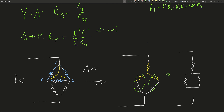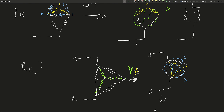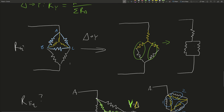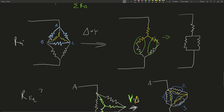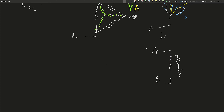A general rule of thumb: if you see triangles of resistors in your resistor network, doing a Y-delta transform — either delta-to-Y or Y-to-delta — can remove those triangles and simplify the circuit.